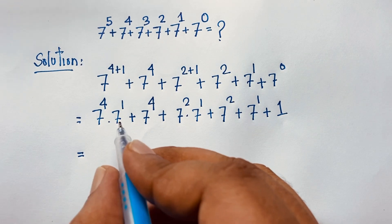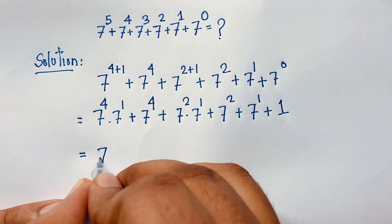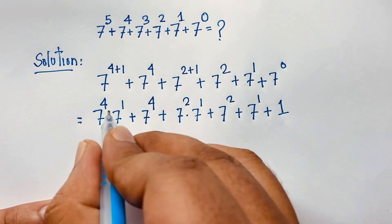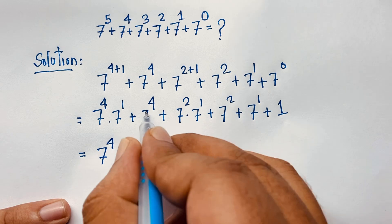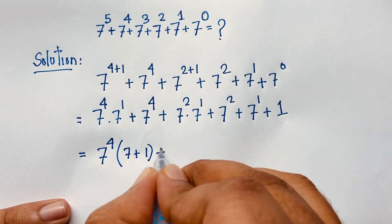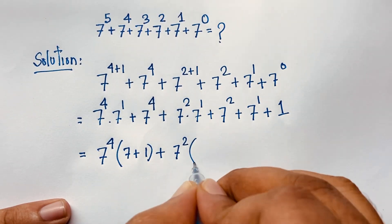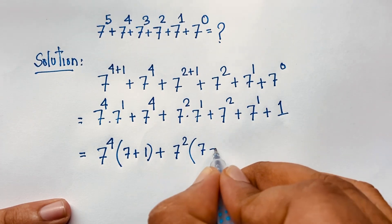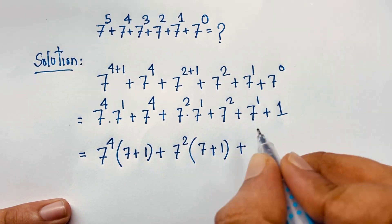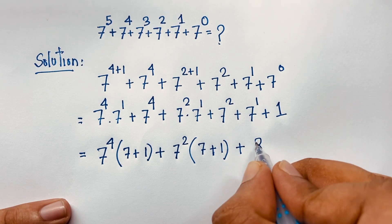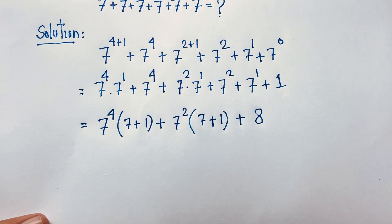Now I can see that 7 to the power 4 is common in the first two terms. Taking 7 to the power 4 as a common factor: dividing out gives 7, and dividing the other term gives 1. And we know that 7 plus 1 equals 8.